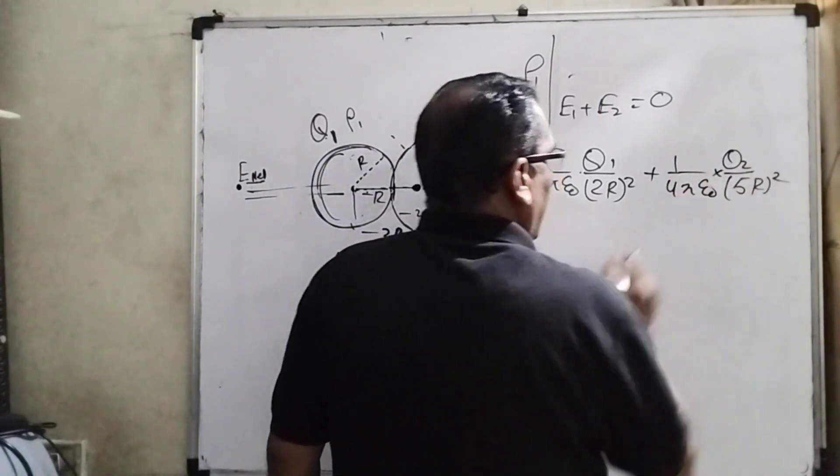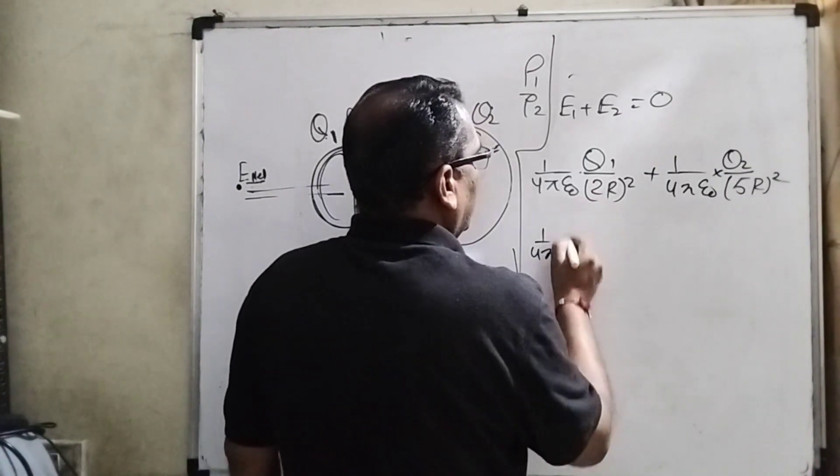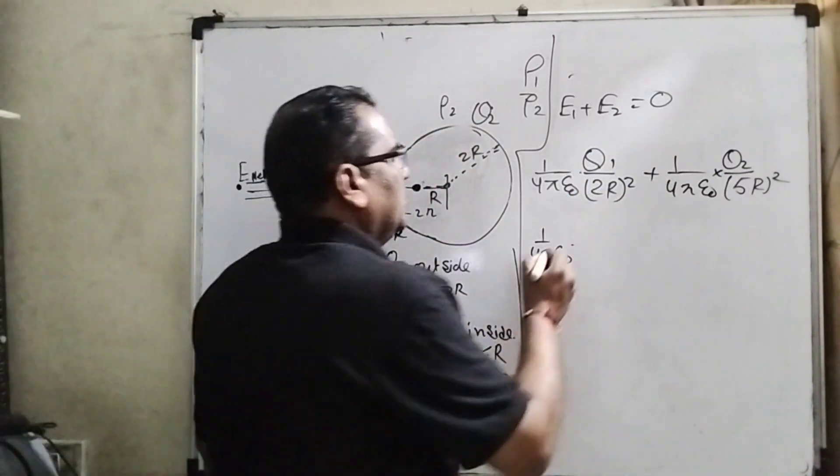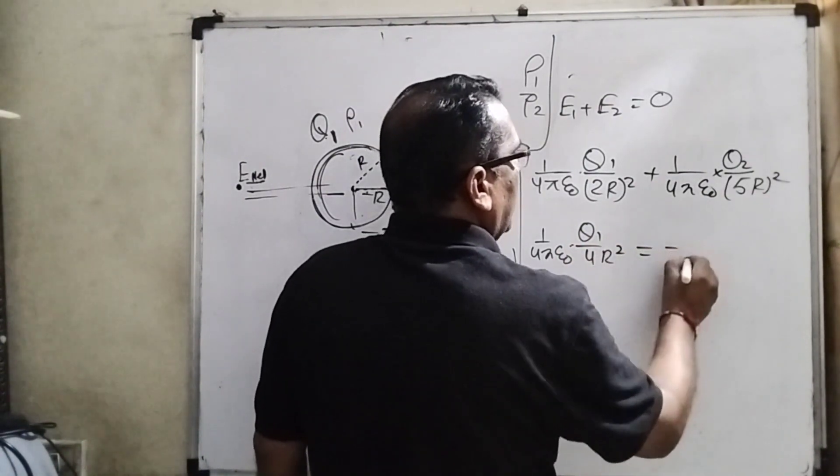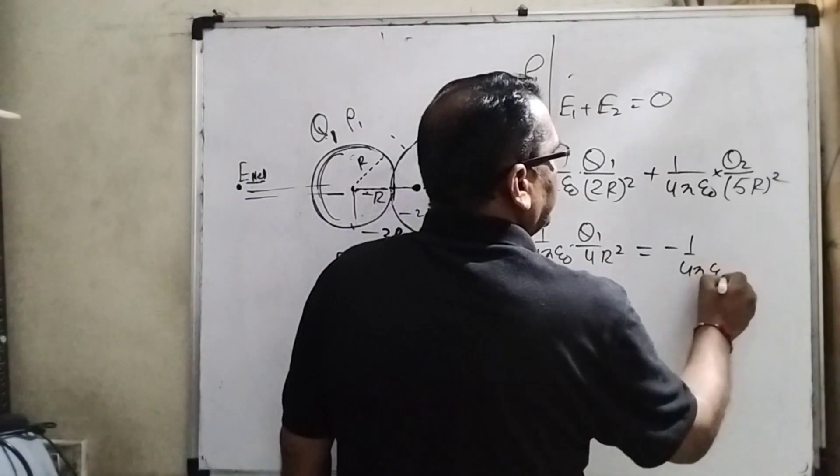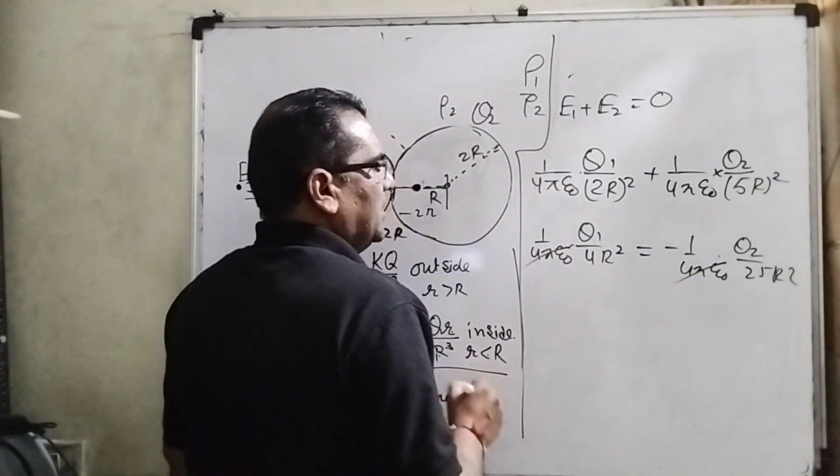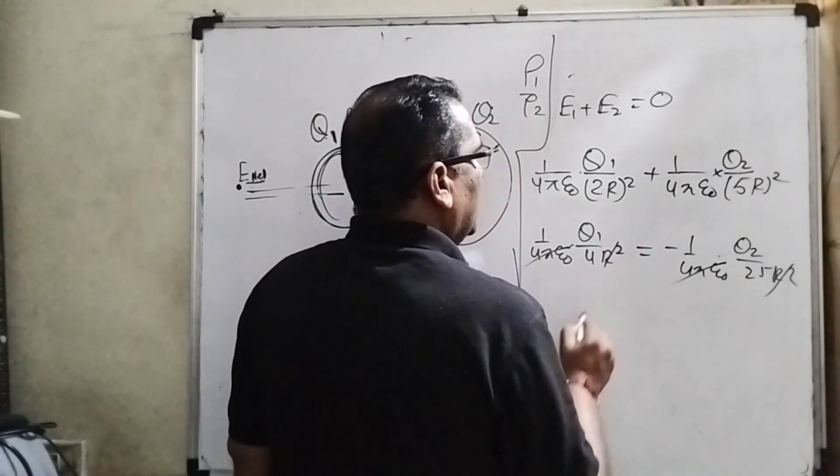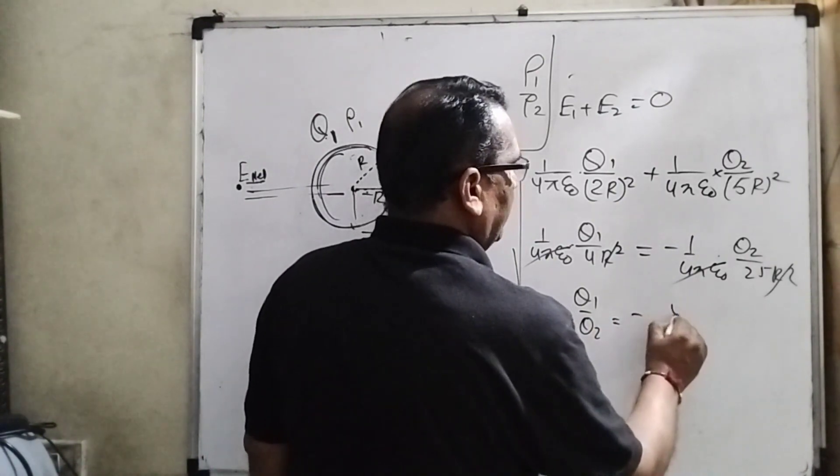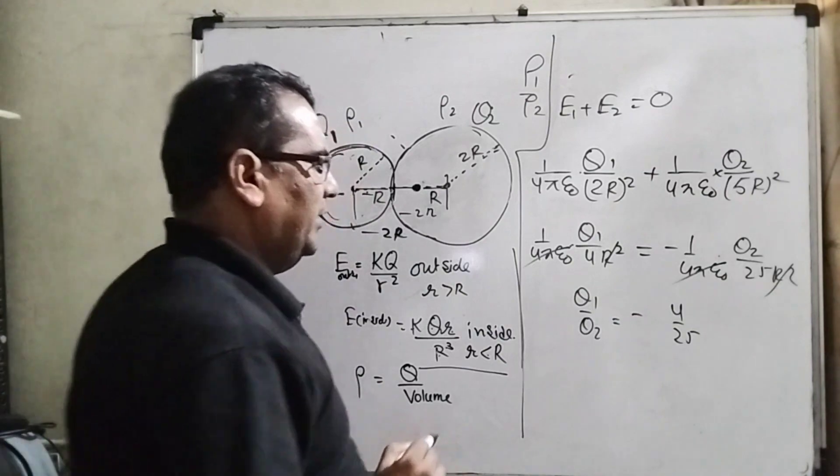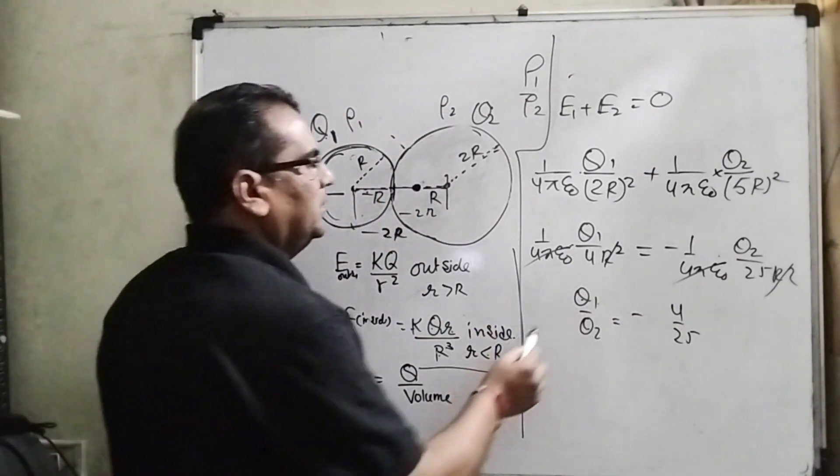So it becomes 4r square. So 1 by 4 pi epsilon 0 q1 over 4r square is equal to minus 1 upon 4 pi epsilon 0 q2 over 25r square. So here 4 pi epsilon 0 cancel out. R square cancel out. Q1 upon q2 is minus 4 by 25, but you know that variable q1 and q2 there is a relation we already found out.